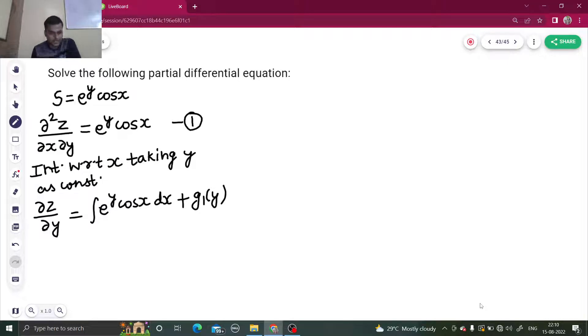∂z/∂y now equals—y is constant, so e^y comes out—integration of cos x is simply sin x plus g₁(y).